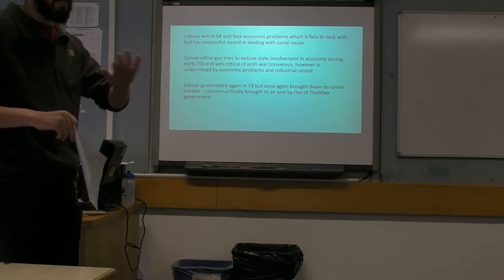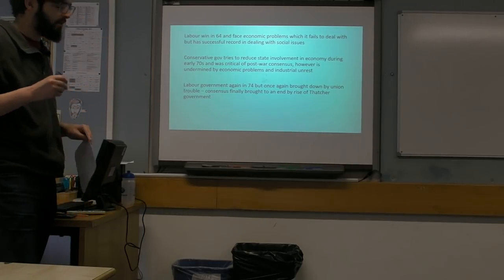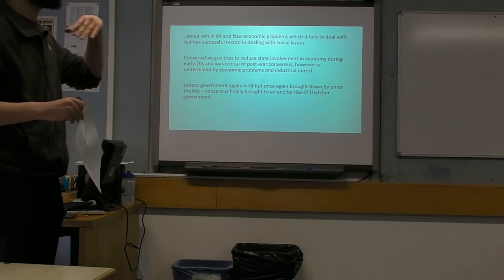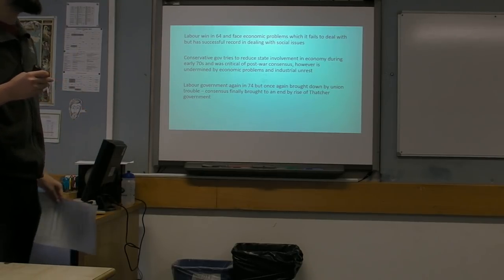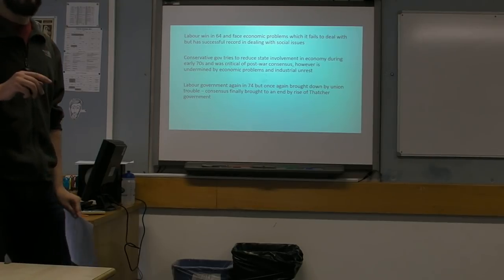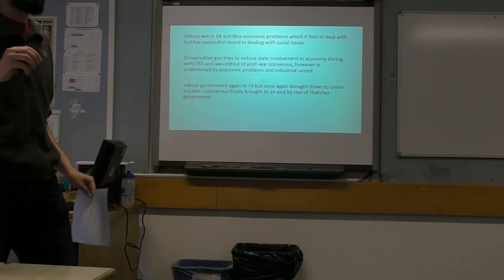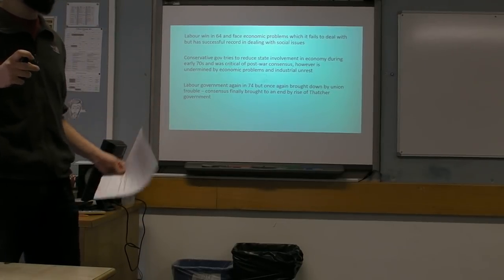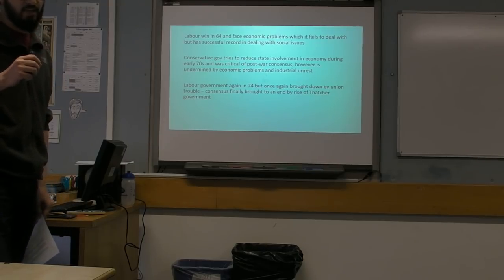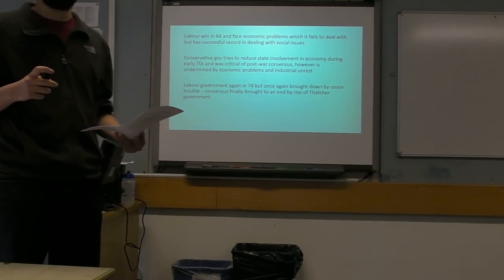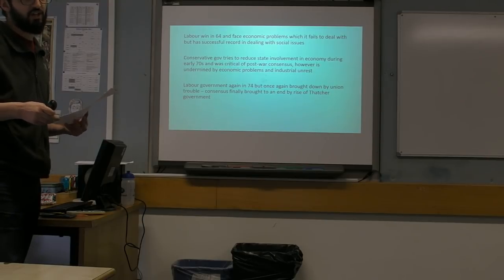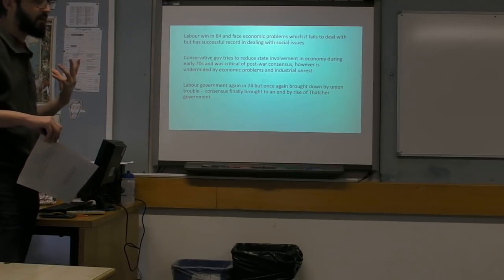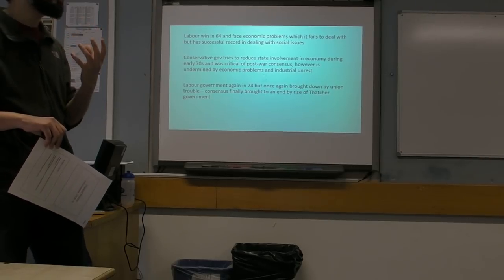Finally, the last government in this post-war period is a final Labour government, coming in in 1974 under Harold Wilson. Wilson steps down in 1976 and Jim Callaghan becomes Prime Minister instead. Once again, very similar to Ted Heath, the same set of patterns affect that government — it gets substantially affected by the economic crisis of the day, and issues with the unions resurface. They struggle to deal with the same issues that Heath struggled with, and they are defeated finally in 1979 by Margaret Thatcher. The rise of Thatcher is where the post-war consensus really comes to an end — she promises to bring it to an end and that is what she does.